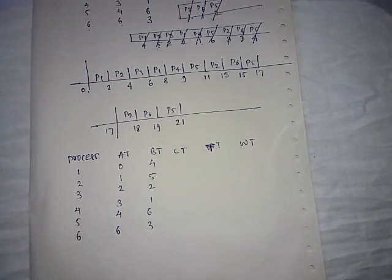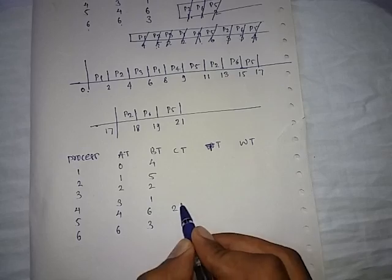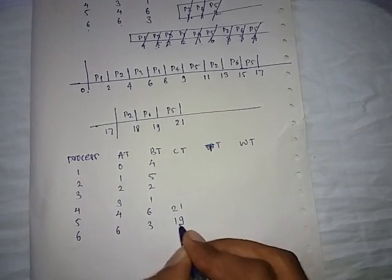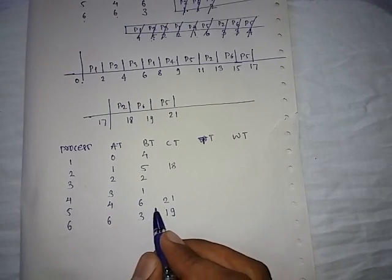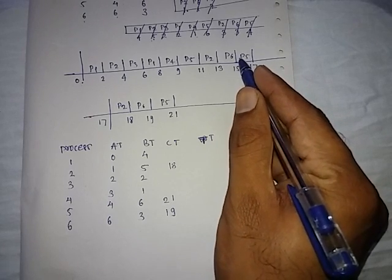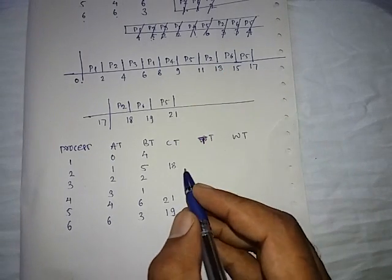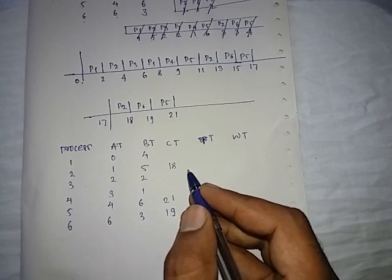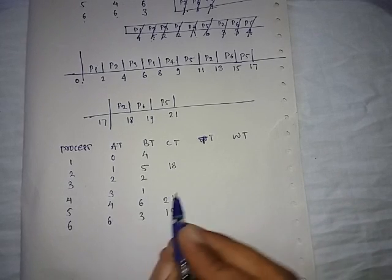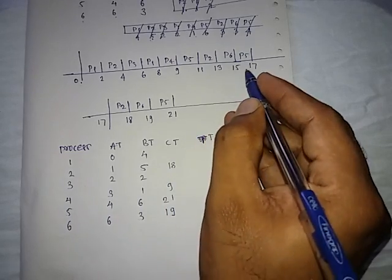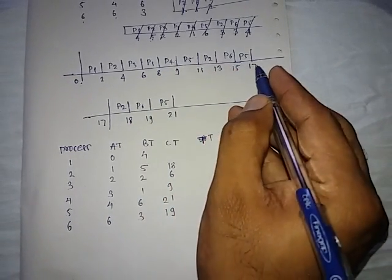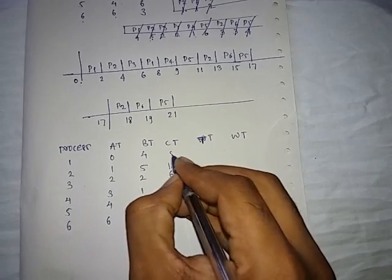The completion time can be calculated from this Gantt chart. Check from right hand side to left hand side the last occurrence of each process. P5 is 21, so completion time of P5 is 21. P6 is 19. P2 is 18. P4 is 9, P3 is 6, and P1 is 8.